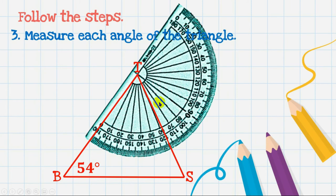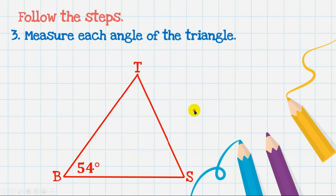For angle T, get the protractor again. Place the zero on the initial side of the angle, find the zero, and note that the vertex is at the 90-degree mark. Counting from 0 upward — 10, 20, 30, 40, 50, 60, 61, 62 — angle T measures 62 degrees.